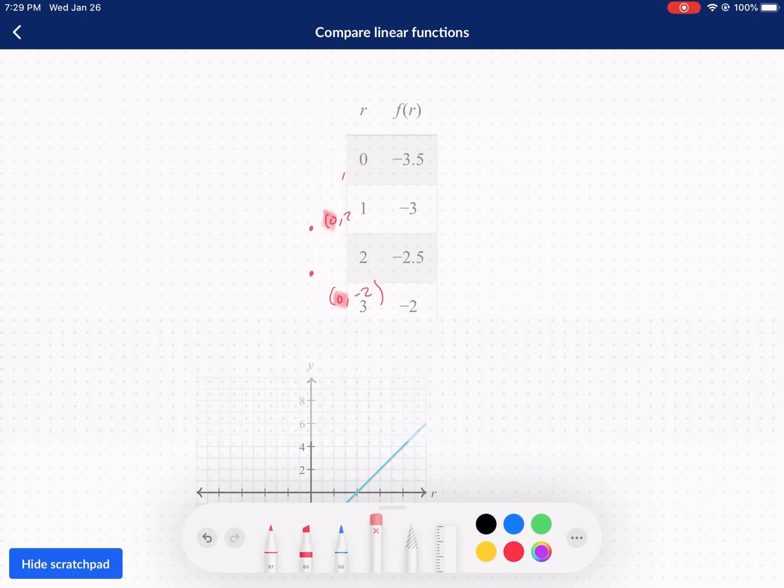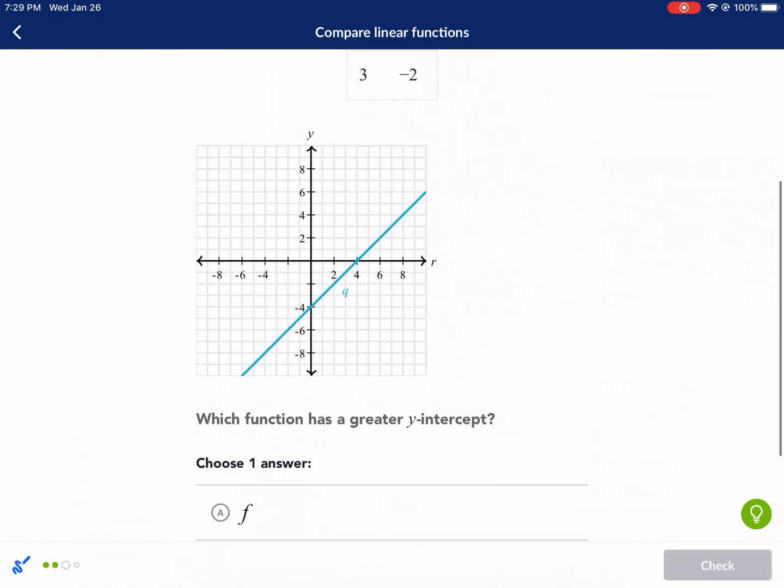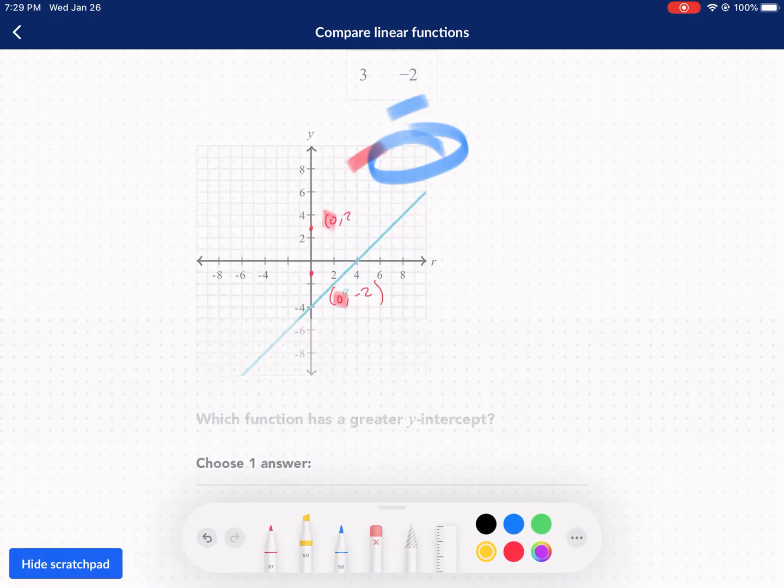Okay, so if we go up here, we're gonna look for an X value, hey, crowded my screen. We're gonna look for an X value of 0, and that will tell us our Y-intercept, negative 3.5. So for F of R, our Y-intercept is negative 3.5. Over here, where does it cross? It crosses right about here, okay? So that's negative 4. So the Y-intercept up here is negative 3.5 for the table, that was R, I believe.